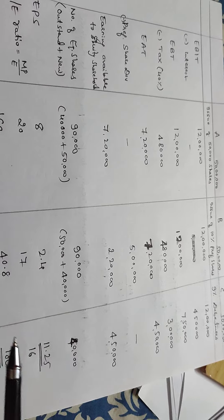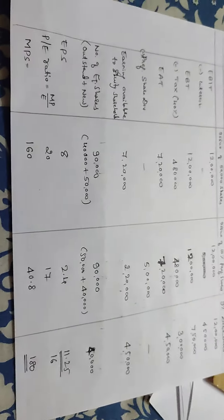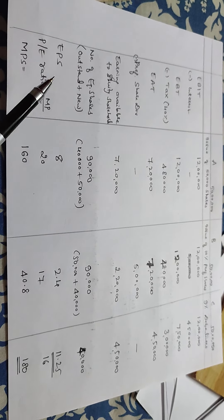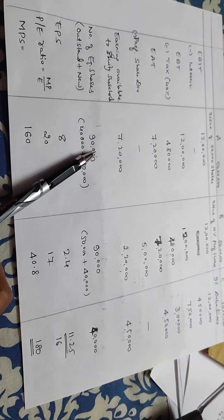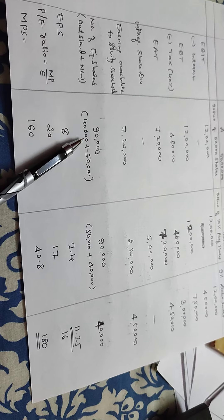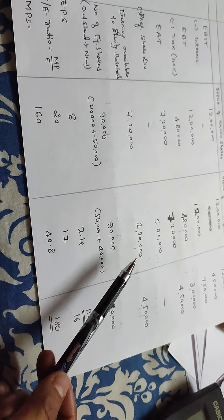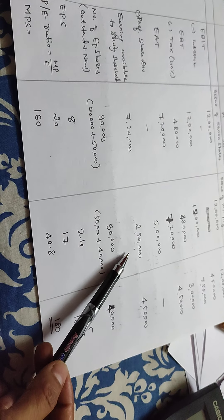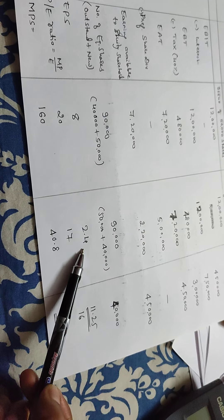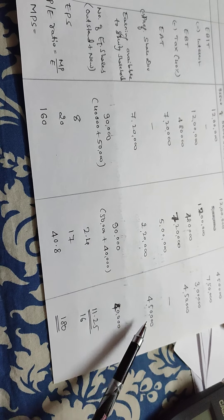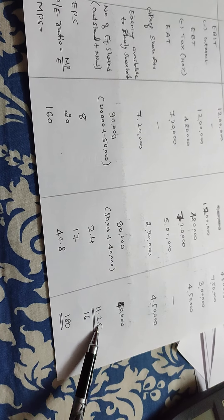Now, EPS calculation. Earnings available to equity shareholders divided by number of equity shares: first case — 7,20,000 divided by 90,000 = EPS of 8 rupees. Second case — 2,20,000 divided by 90,000 = EPS of 2.44 rupees. Third case — 4,50,000 divided by 40,000 = EPS of 11.25 rupees.